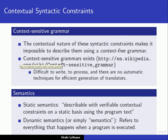Why don't we use context-sensitive grammars if they can express these constraints? The problem is that they are very difficult to write and also difficult to process — we do not have automatic techniques for efficient generation of compilers or translators from context-sensitive grammars. We do, however, have automatic techniques for generating compilers from context-free grammars, and we will see that later. What we have been discussing are often referred to as semantic constraints — contextual syntactic constraints are often called semantic constraints.